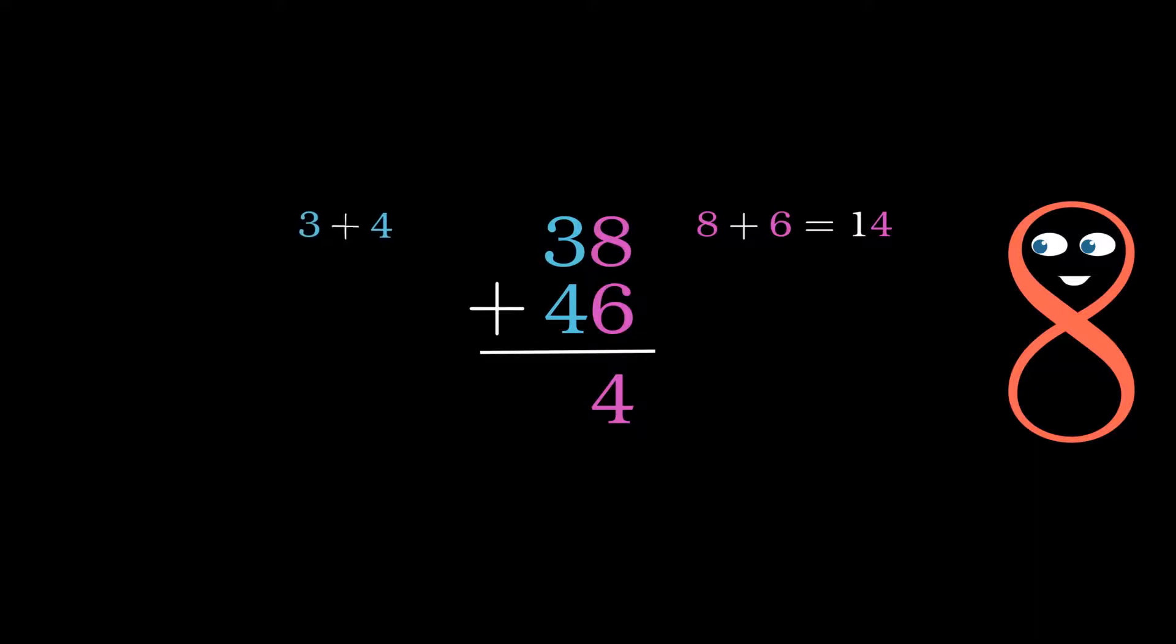Moving on to the next number column on the left, 3 plus 4 equals 7, but this time 1 must be included in the sum, so we end up with 8 instead, and the result is 84.